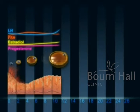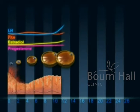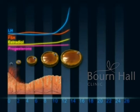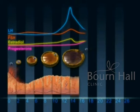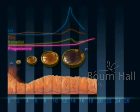In the middle of the cycle, the LH surge results in ovulation. As a result of the rise in progesterone following ovulation, the endometrium transforms itself in preparation for the reception of the embryo.